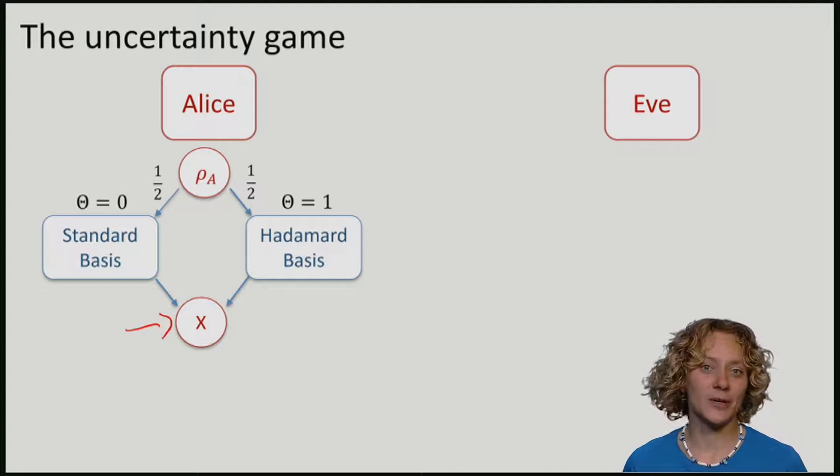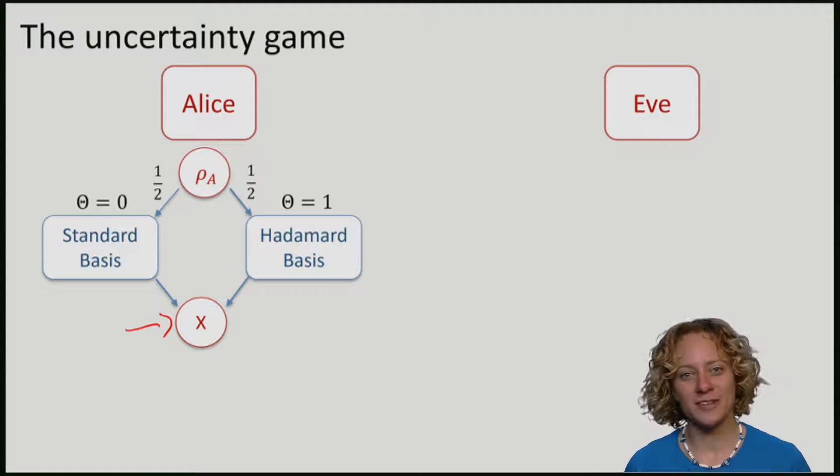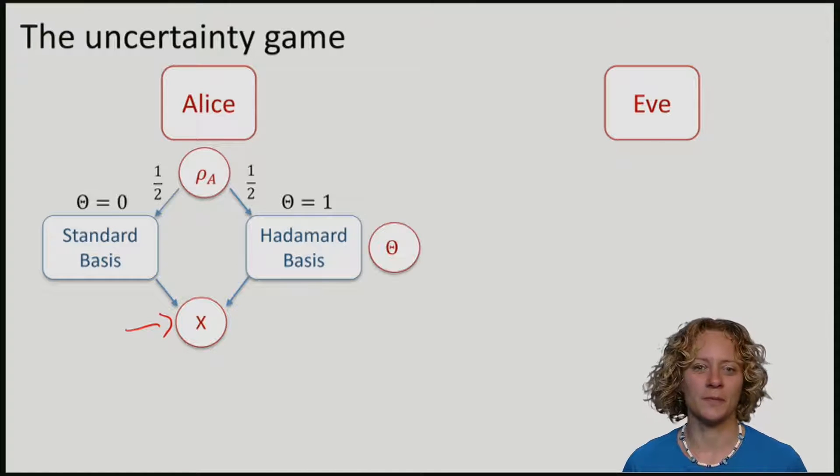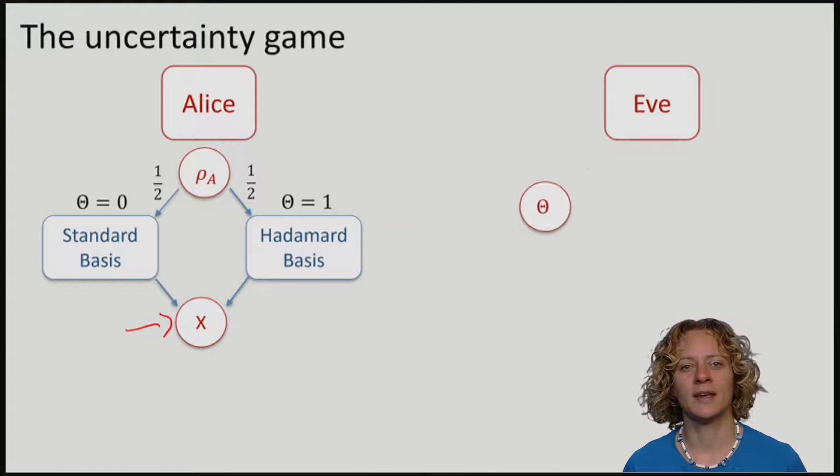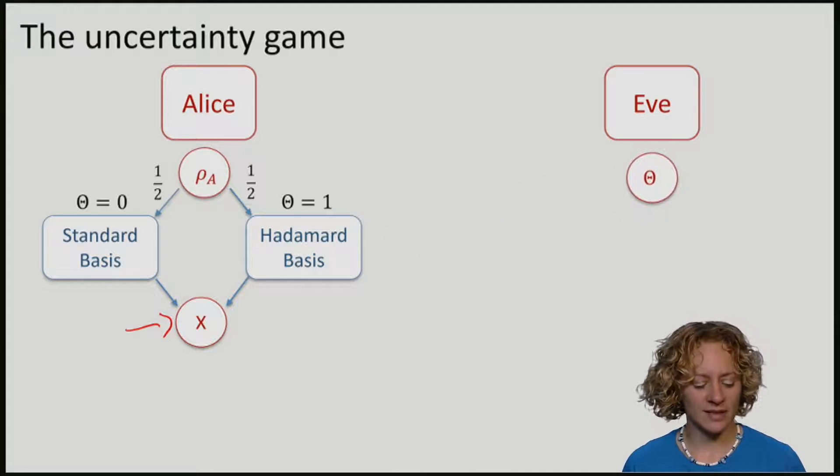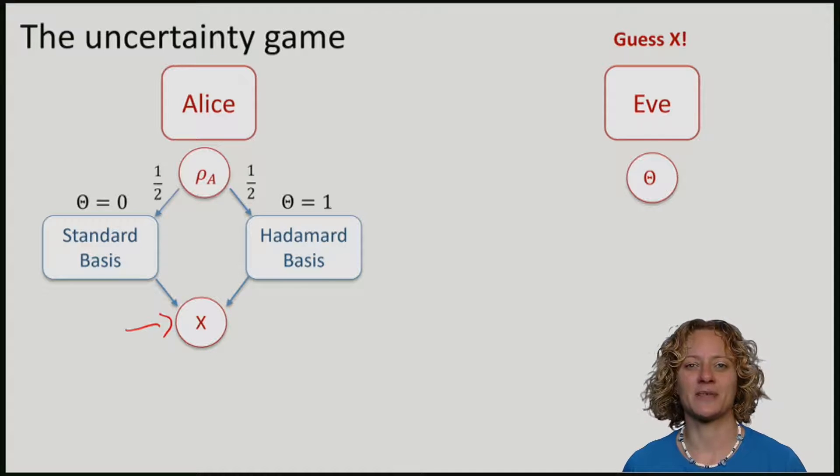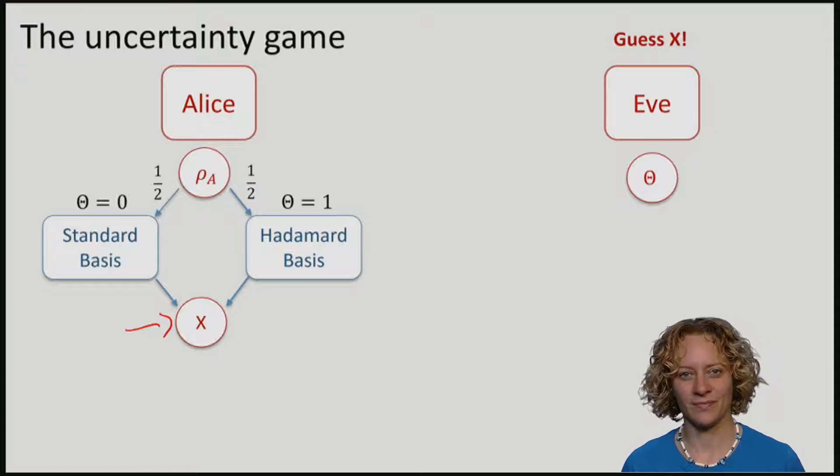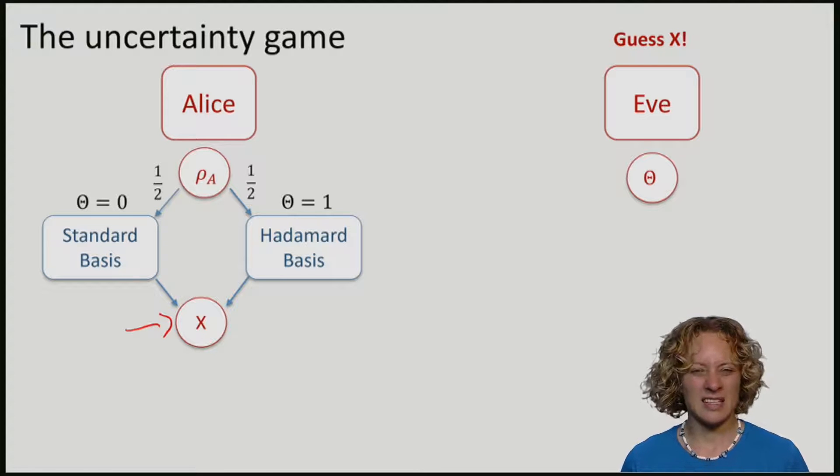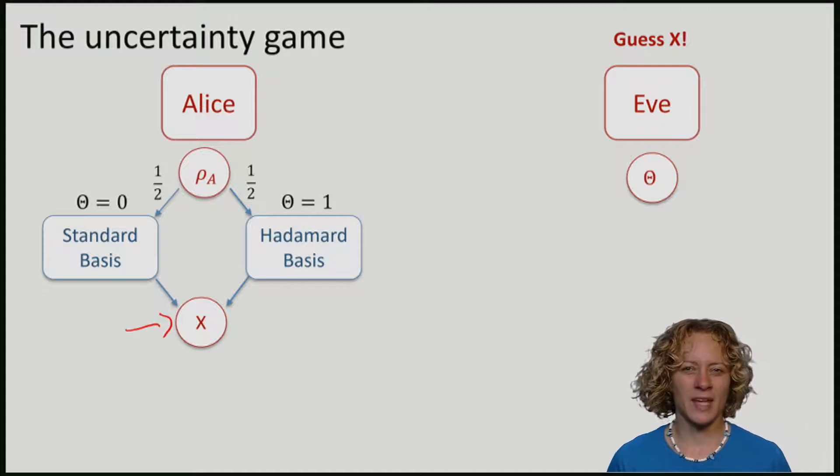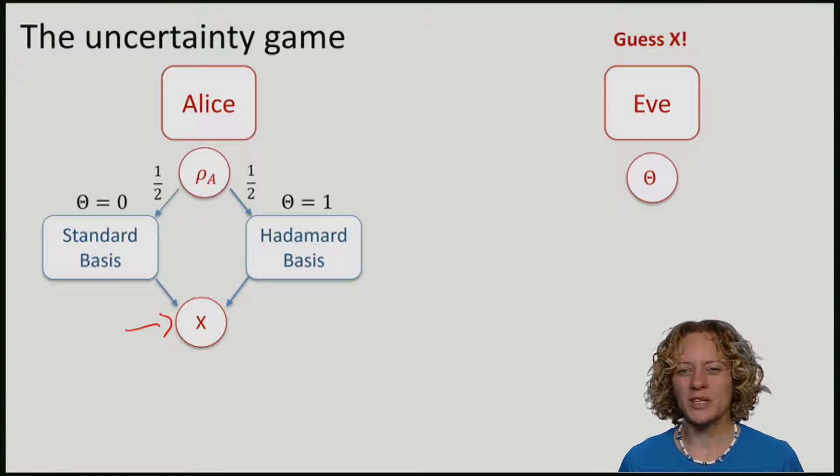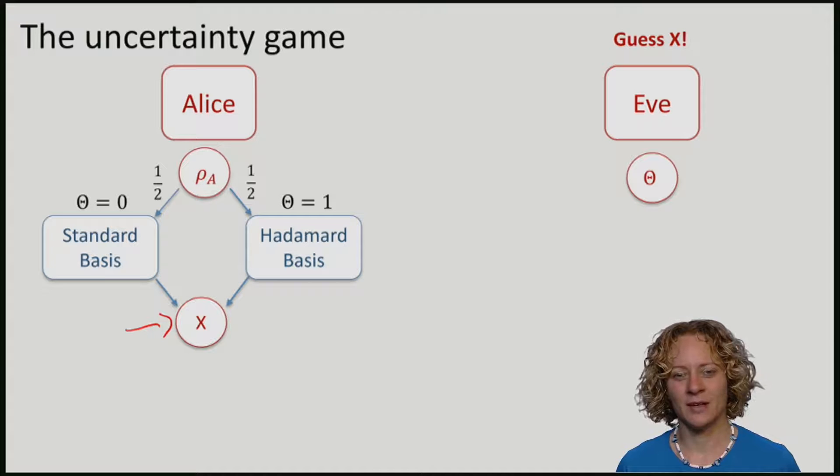To be fair, Alice tells Eve which measurement she performed. Eve wins the game if she correctly manages to guess Alice's measurement outcome x. This may seem quite abstract, and you might be wondering, what does this have to do with uncertainty?